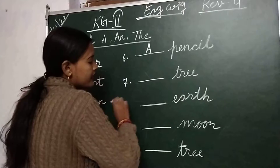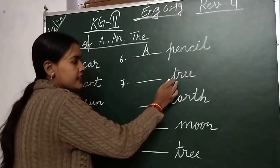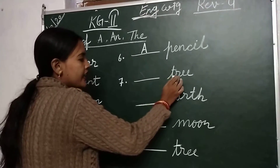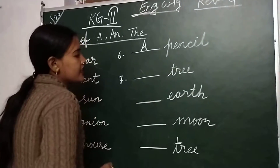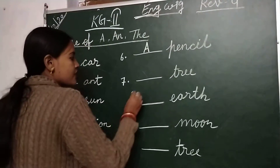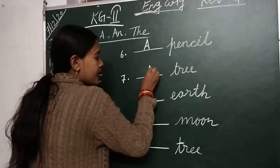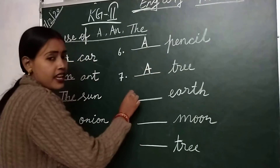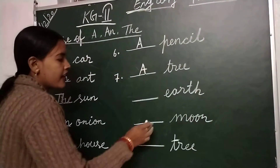Number 7 is tree. T-R-E-E, tree. So children, write down: a tree.